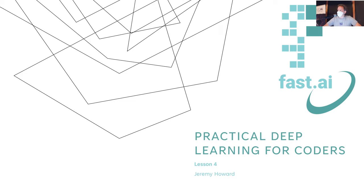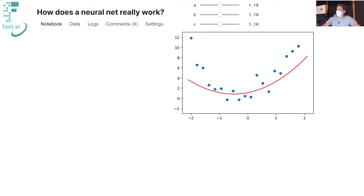In the book, we do NLP using the FastAI library, using recurrent neural networks, RNNs. Today we're going to do something else — we're going to do Transformers, and we're not even going to use the FastAI library at all. What we're going to be doing today is fine-tuning a pre-trained NLP model using a library called Hugging Face Transformers.